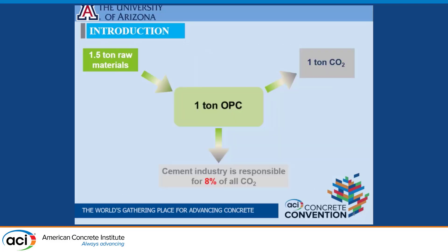But is there an issue with that? We are all talking about sustainability during the last years. To produce one ton of OPC, you need about 1.5 tons of raw materials, and that releases about one ton of CO2 to the atmosphere — which is about 8% of all CO2 released to the atmosphere annually.